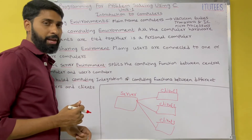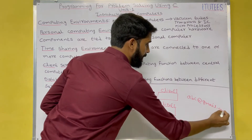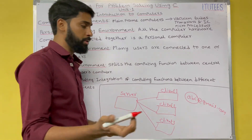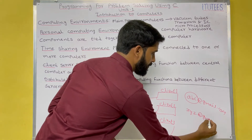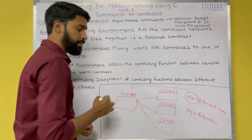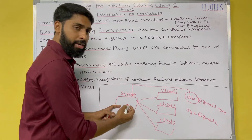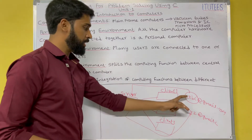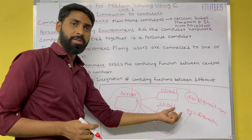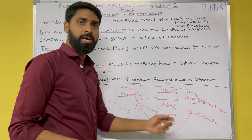For example, consider your Gmail account. If I have a Gmail address abc@gmail.com, and abc wants to send a mail to xyz, that mail is stored in the server. When xyz logs into the system, the server sends the data to xyz. So these are the clients and this is the Gmail server — clients request the server for services, and the server provides services based on the client's request.